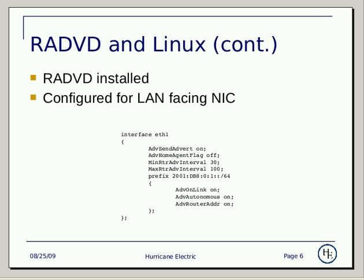These are some of the basic options that are available. You can read more about different options under the RADVD documentation. You also specify in this config, underneath the interface, what prefix you want advertised. This needs to be the same prefix that you've configured that first usable address out of.